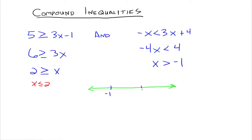We have negative 1 and 2 on the number line. Numbers less than 2 go to the left of 2; numbers greater than negative 1 go to the right. Because this is an 'and' compound inequality, we're looking for where those two intervals overlap, which is between negative 1 and 2. Negative 1 is not included, while 2 is included.